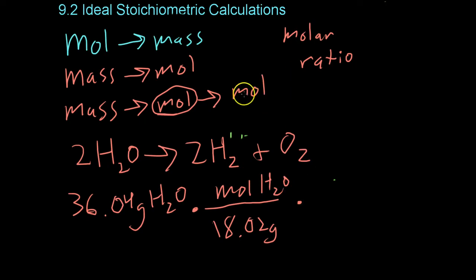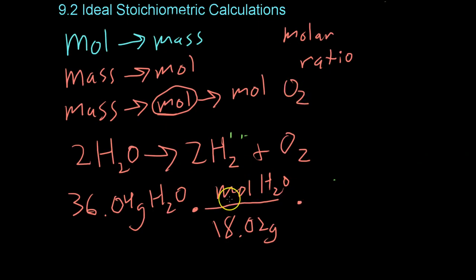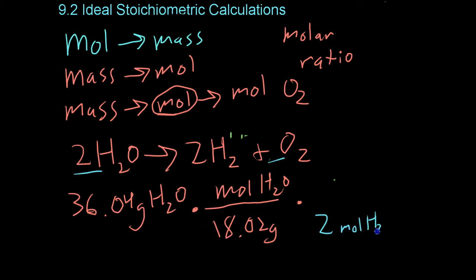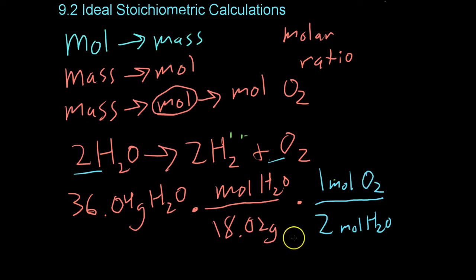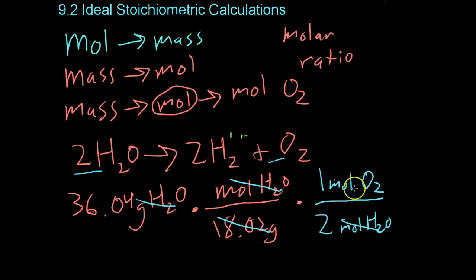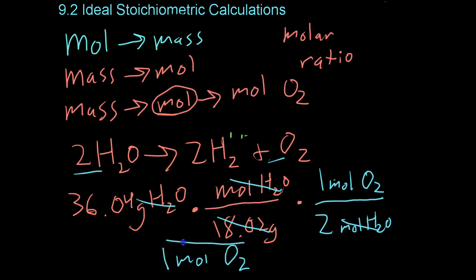And then, let's say you were trying to find the number of moles of oxygen that you would end up with. You simply multiply by the molar ratio of oxygen to water. In this case, for every two moles of water, you get one mole of oxygen gas. And then, if you do some canceling, you get the correct units, which is good. As well, these numbers are pretty easy. You end up with exactly one mole of oxygen after doing the math.